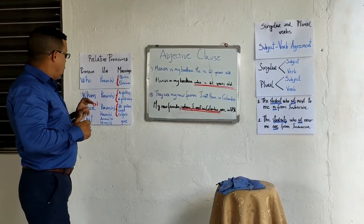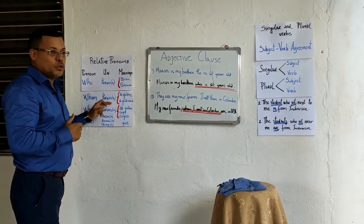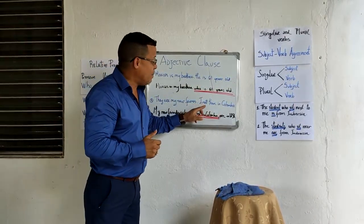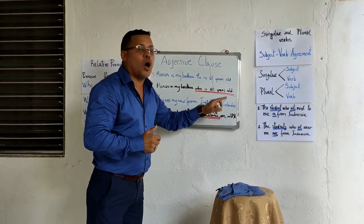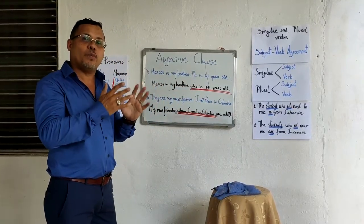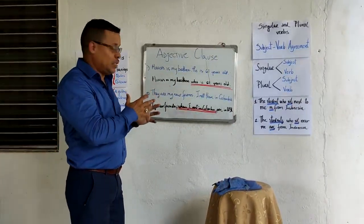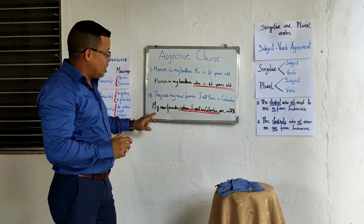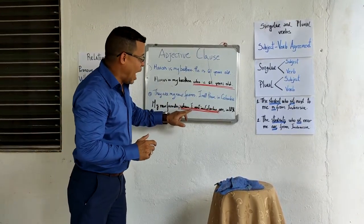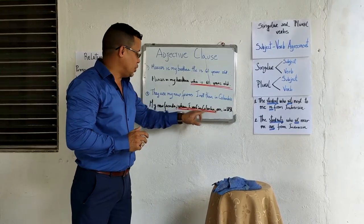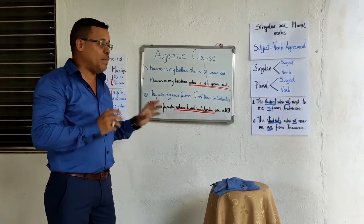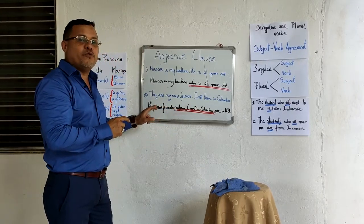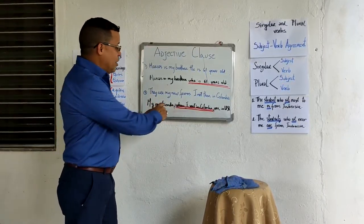For example, using 'whom': 'There are my new friends. I met them in Colombia.' When I want to make an adjective clause using whom, I put: 'My new friends, whom I met in Colombia.' I use a comma because I am giving extra information about my new friends.